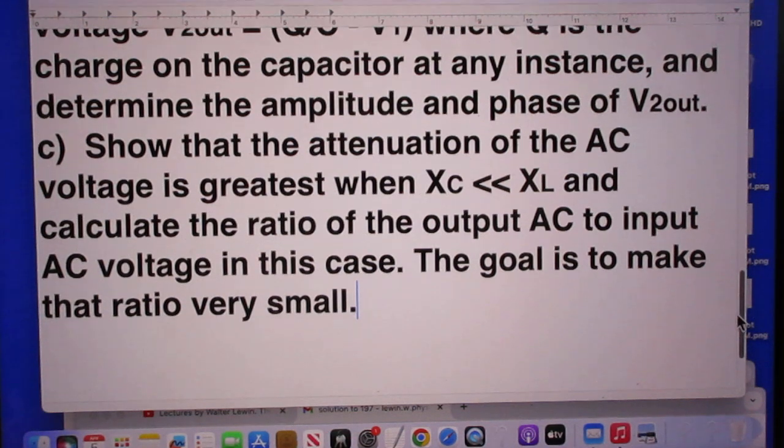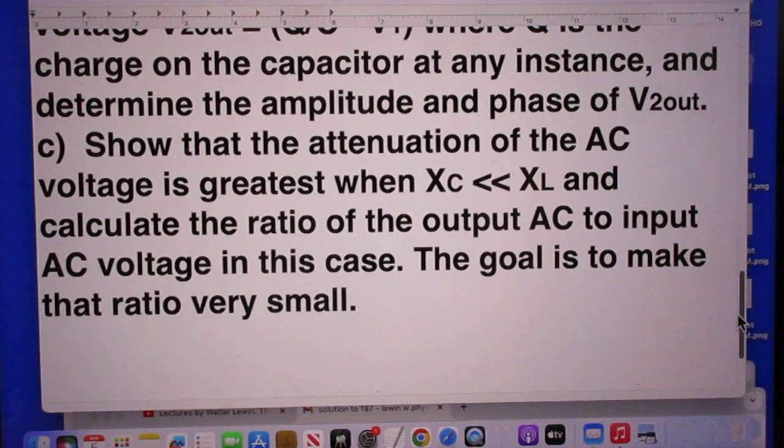Last question: show that the attenuation of the AC voltage is greatest when XC is much much smaller than XL, and calculate the ratio of the output AC to input AC voltage in this particular case. The goal of course is to make that ratio as small as possible.